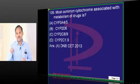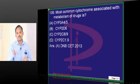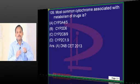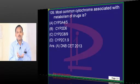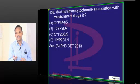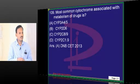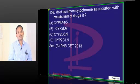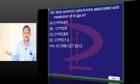In CYP3A4: cytochrome P450 explains the 'P450' part — it belongs to a porphyrin-containing structure with peak absorption at 450 nanometres. Then 3A4: 3 is the family, A is the subfamily, and 4 is the specific isomer number. It may have multiple isomers.